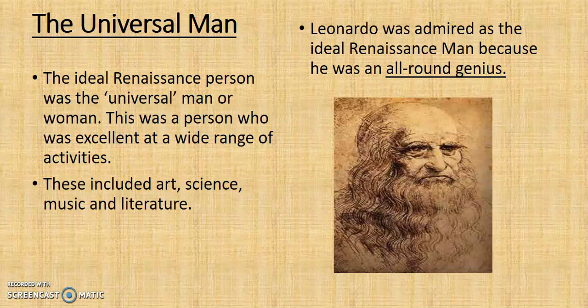Leonardo was born in 1452 in Vinci, near Florence — that's where he got his name. The word 'da' in da Vinci means 'of', so he's Leonardo of Vinci. His father wanted him to become a lawyer, but Leonardo was interested in painting. At 15 years of age he was apprenticed to Verrocchio, a leading Florentine artist, and learned to paint. It soon became clear that Leonardo was better than his master. The ideal renaissance person was this universal man or woman — excellent at a wide range of activities including art, science, music, and literature. Da Vinci was seen as this ideal universal man personified, this all-round genius.